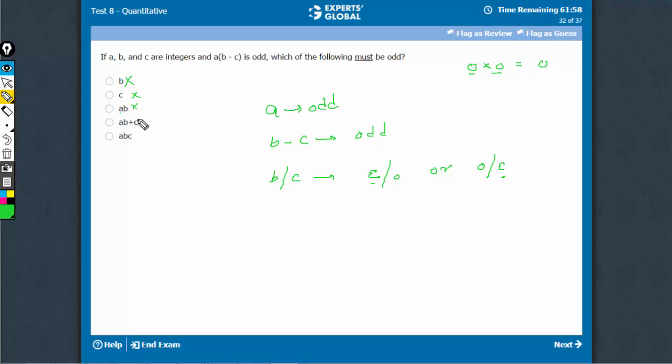AB plus C has to be odd because A is definitely odd. If B is even, then C has to be odd. So we'll have odd times even, which is even, plus odd, which equals odd.